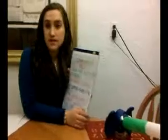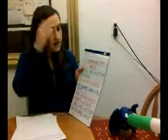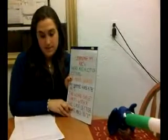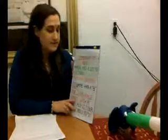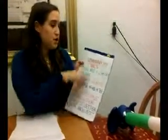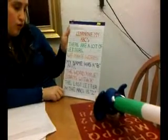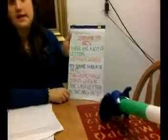The students or the teacher pick a topic. Each child gives their own creative insight. The different colors correspond to the different children, and each child represents their own unique idea. This example is learning my ABCs. There are a lot of letters. We make words. My name has a B in it. The word apple starts with A. The last letter in the ABCs is Z.